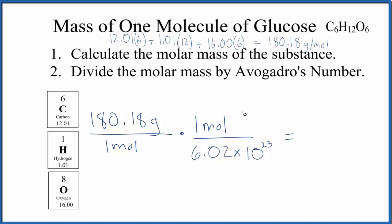So now we multiply the top, divide by the bottom. We have moles on top and bottom. That cancels out. We're going to get grams. So our final answer is 2.993 times 10 to the negative 22nd grams. And that's how many grams we have in one molecule of glucose.